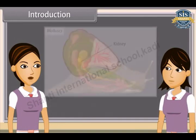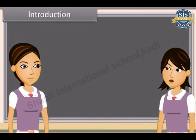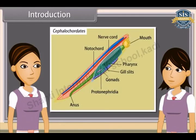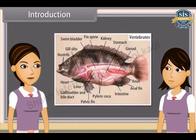In molluscs, excretory organs are kidneys. Similarly, in echinoderms, excretory organs are dermal papulae. While in urochordates, it is neural gland, and in cephalochordates, it is protonephridia. In vertebrates, excretory organs are one pair of kidneys.